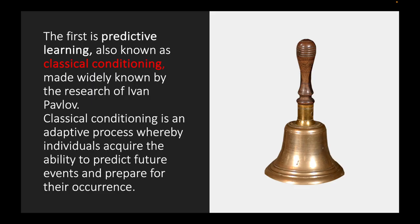The first kind of learning is called predictive learning in Levy's textbook. Other authors, other researchers, including myself, will probably refer to this predictive learning as classical conditioning. And classical conditioning was made widely known due to the research of a Russian scientist named Ivan Pavlov. Classical conditioning is a process whereby individuals acquire the ability to predict future events and to prepare for those events, the occurrence of them.